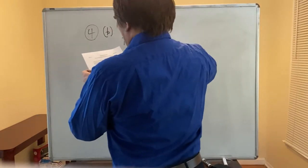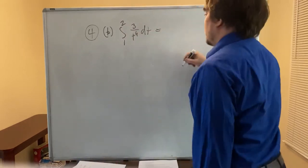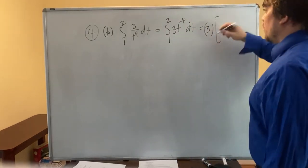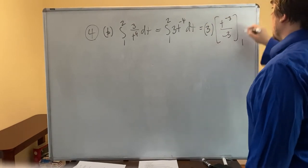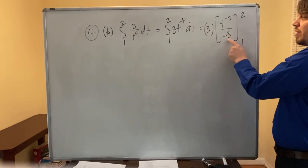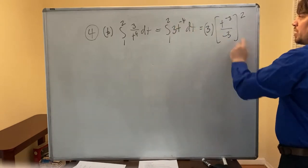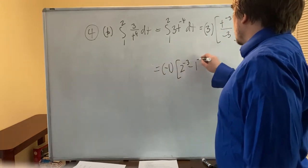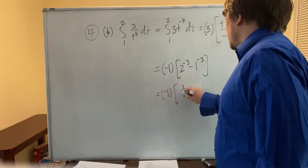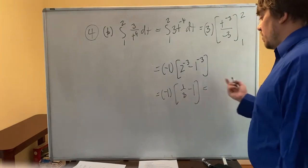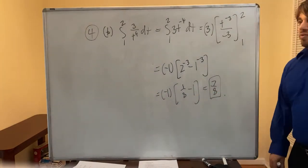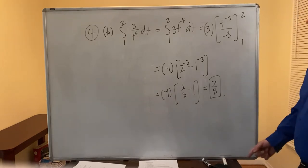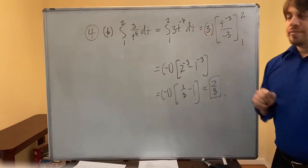Part b: the definite integral from 1 to 2 of 3/t⁴ dt = ∫₁² 3t⁻⁴ dt. The antiderivative is 3 · (t⁻³/−3) = −t⁻³, evaluated from 1 to 2. That equals −(2⁻³ − 1⁻³) = −(1/8 − 1) = −(−7/8) = 7/8. So the answer is 7/8.